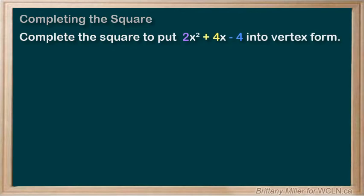Okay one more. I need to show you what to do if a isn't 1. Consider 2x squared plus 4x minus 4. We're going to take that 2 out of the first part of our equation. So it becomes 2 times x squared plus 2x and then minus 4 on the end there.